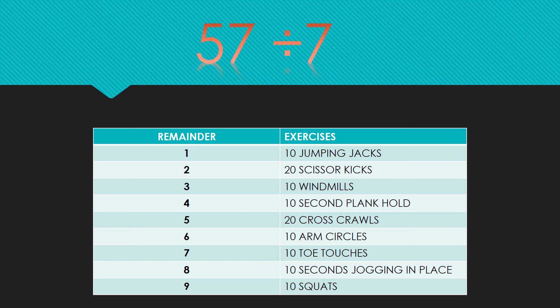This is our last one: 57 divided by seven. Pause the video and solve the problem. Participate in the exercise that matches the remainder and then hit play to see if you are correct. The answer is eight with a remainder of one. So you should have done 10 jumping jacks.